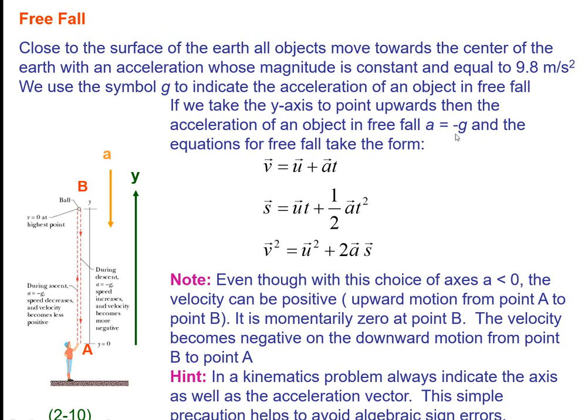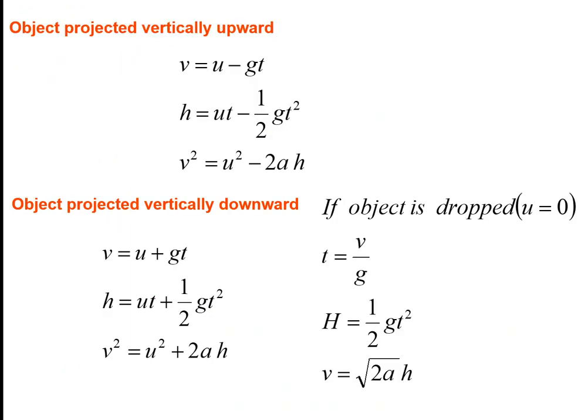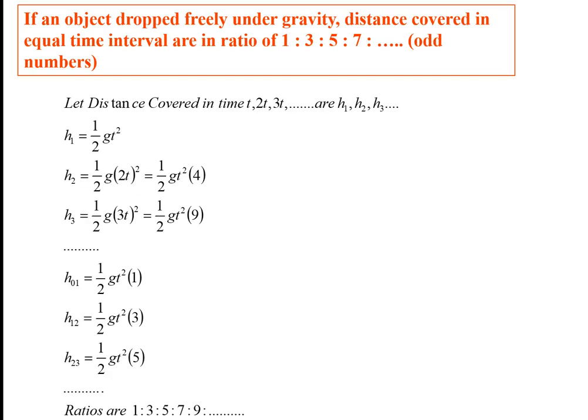For vertical motion, use the three kinematic equations where acceleration is constant: a = −g, because gravity always acts downward. If an object is projected upward, initial velocity and displacement are positive but g is negative: v = u − gt, h = ut − ½gt². If projected downward, velocity, u, and h are all negative — the equation becomes positive overall. If dropped, initial velocity is zero.